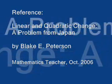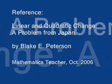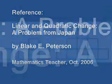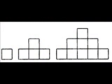The problem described in Blake Peterson's article is based on a growing geometric pattern. Students choose an attribute of this pattern — say area, for instance — and then represent the change in that attribute numerically, graphically, and algebraically.